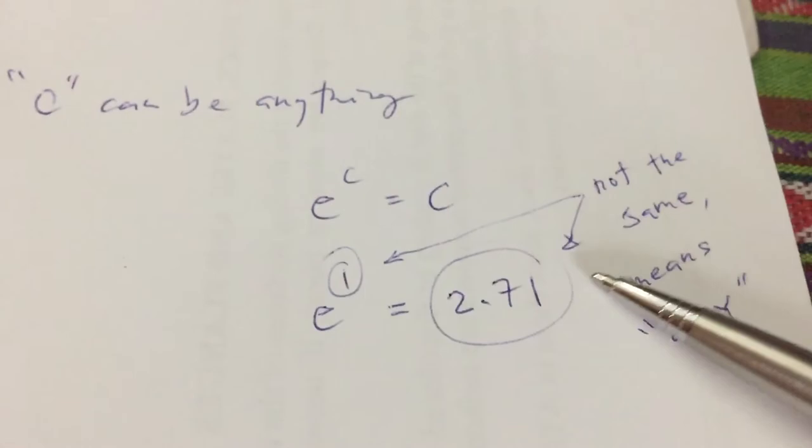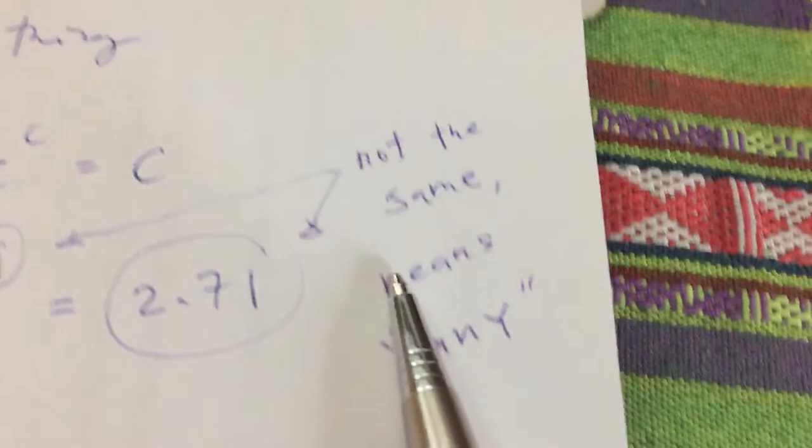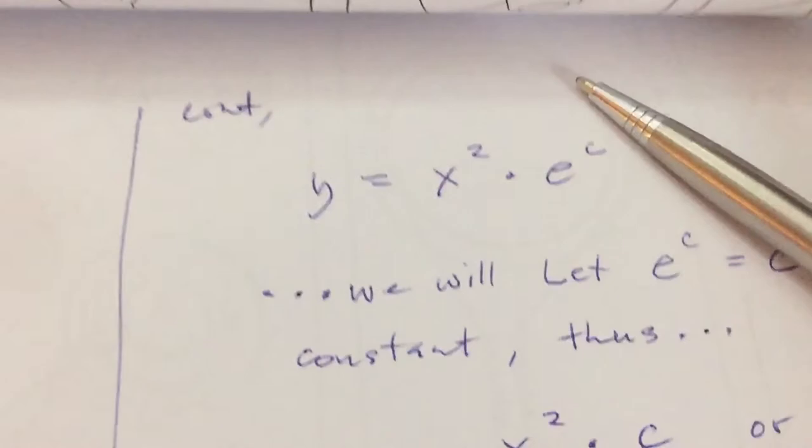Like in this example, it can be any constant. e raised to the first power can be 2.71, but 1 is not equal to 2.71, isn't it? Not the same, because c can be any constant.